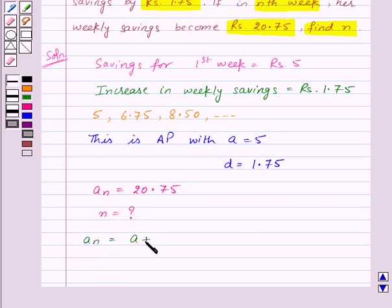And we also know that an is equal to a plus n minus 1 into d, where a is the first term and d is the common difference of the AP. So now substituting the values of an, a, and d, we will get here an is 20.75 equal to a, that is 5, plus n minus 1 into d, that is 1.75.